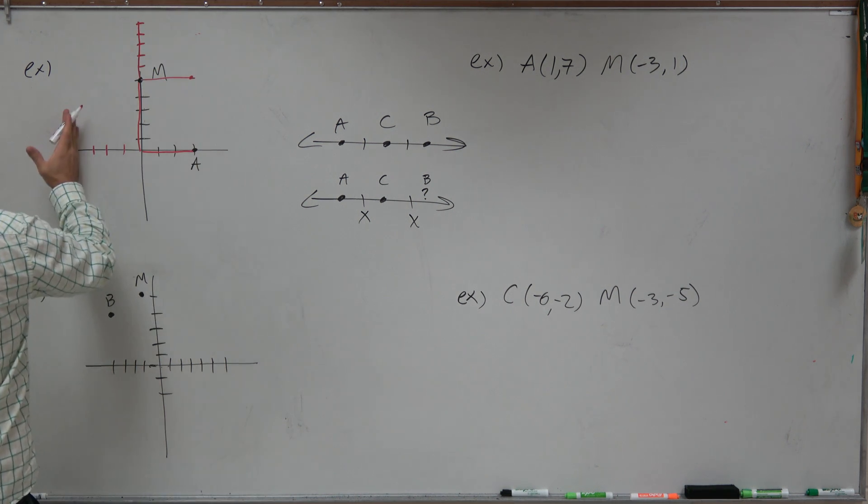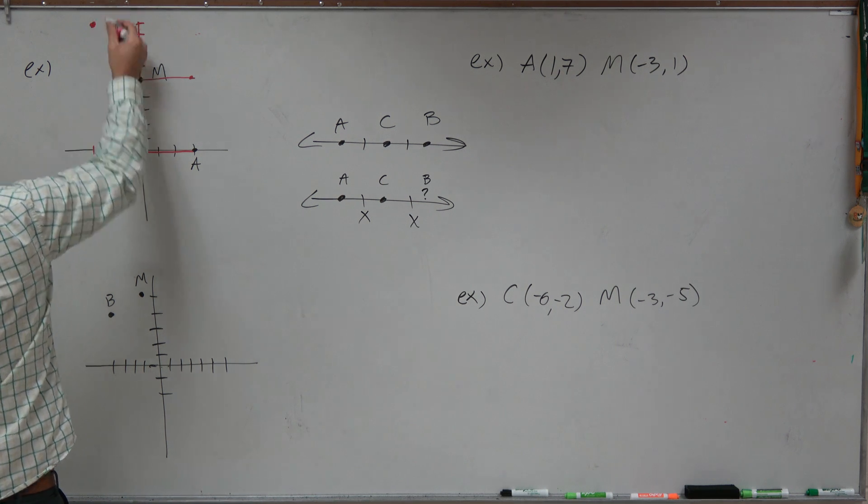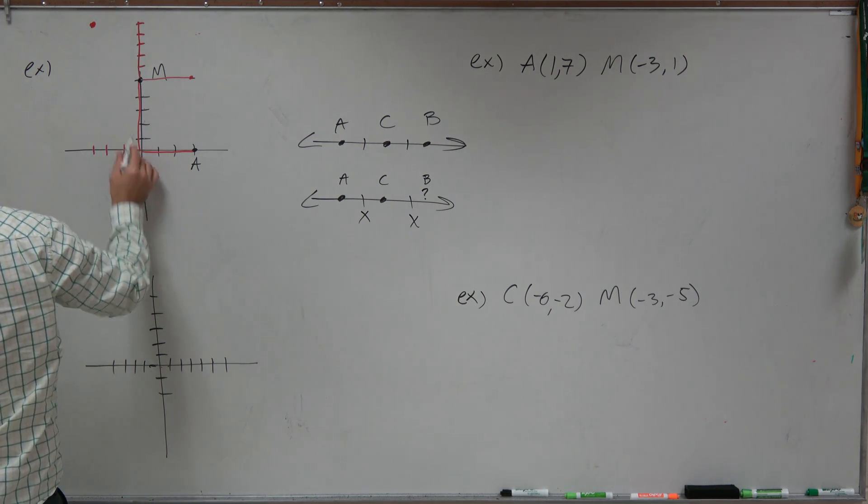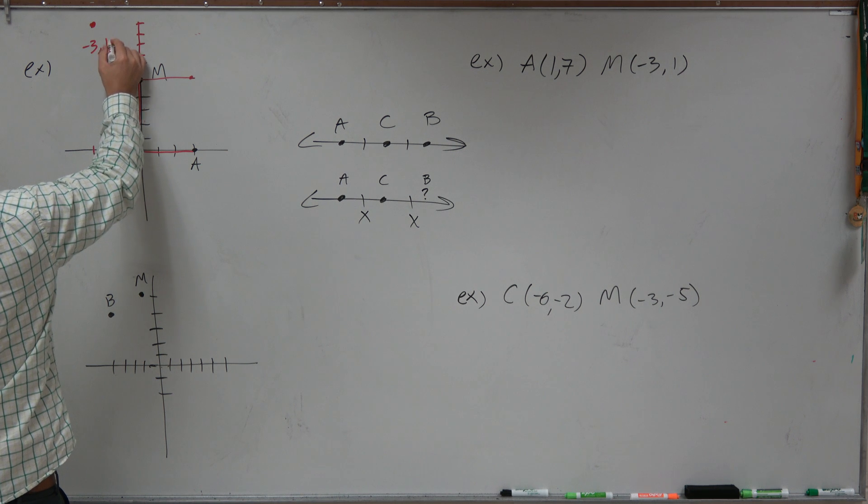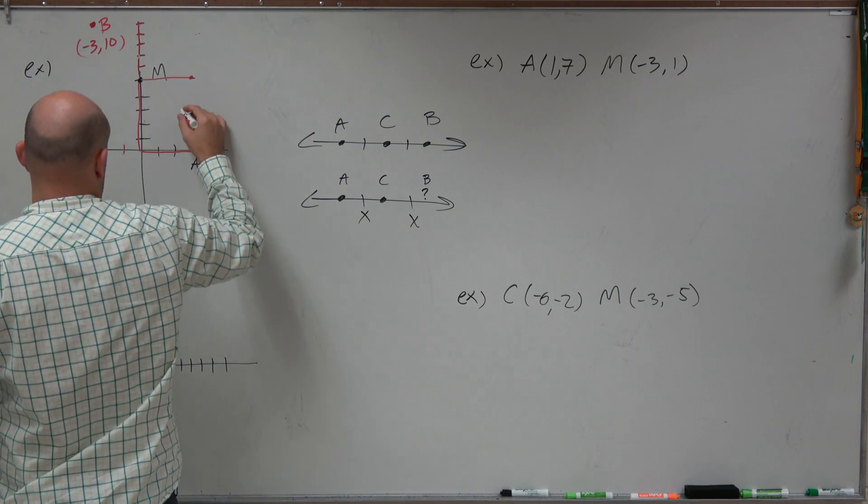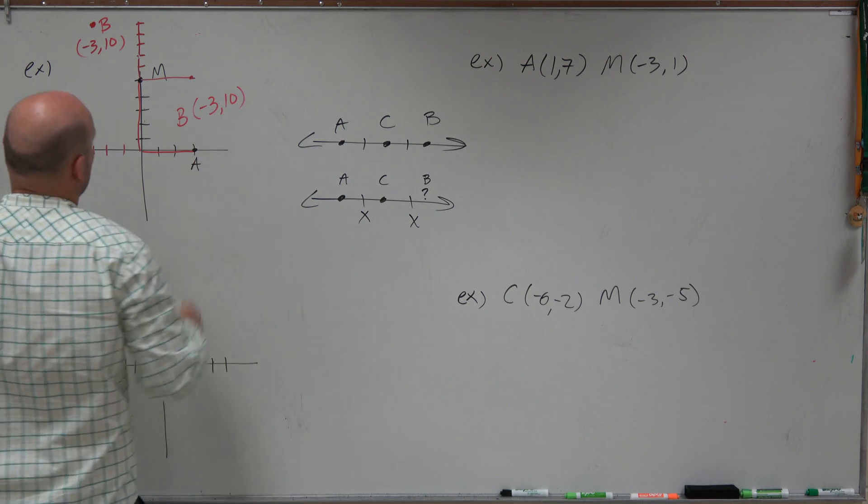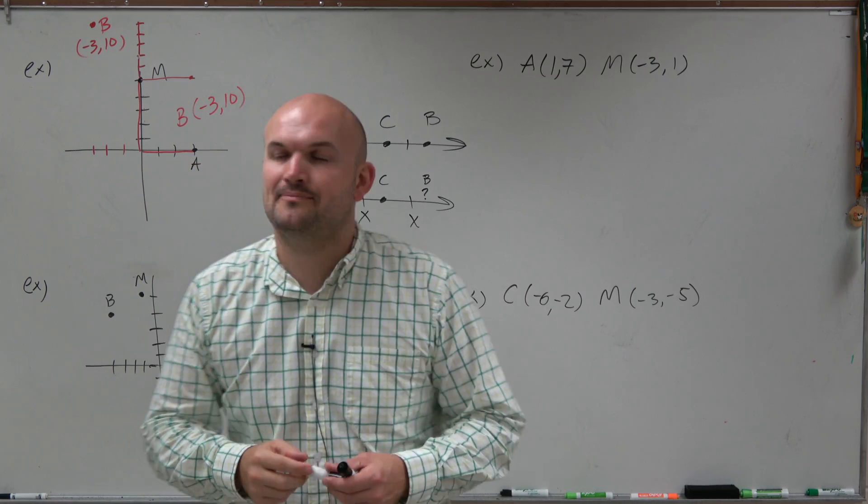I had to travel 3 more to the left, and then 5 more up top, which gives me my other endpoint, which is at negative 3 comma 10. We'll call that B. So my other endpoint is at negative 3, 10.